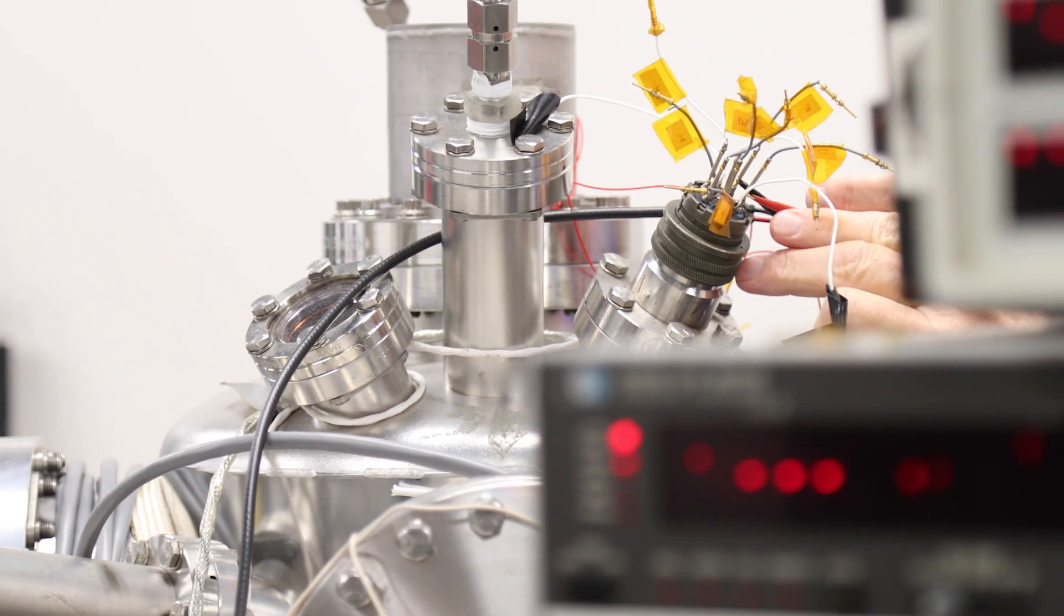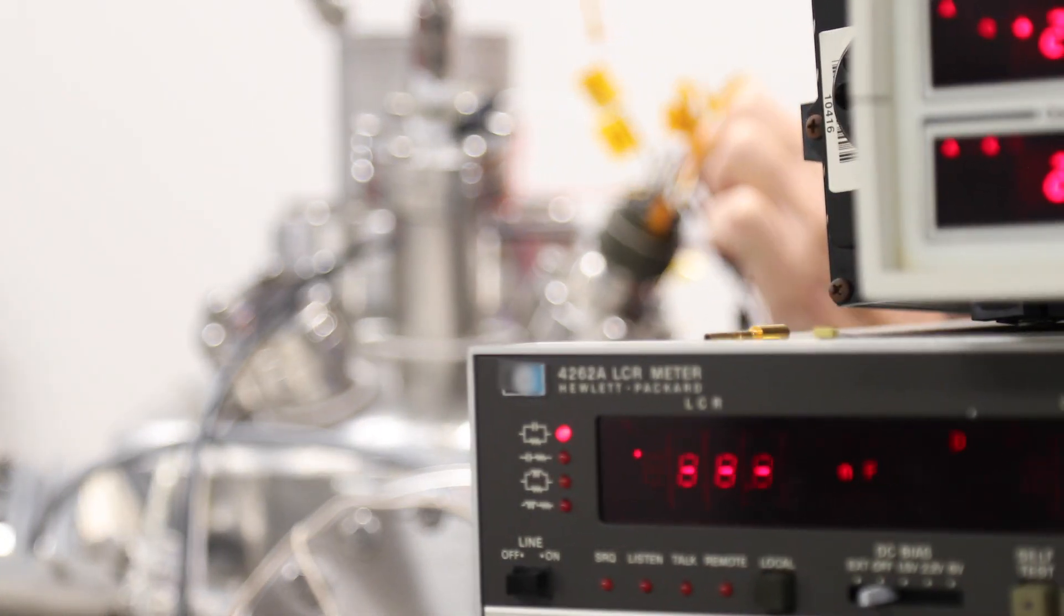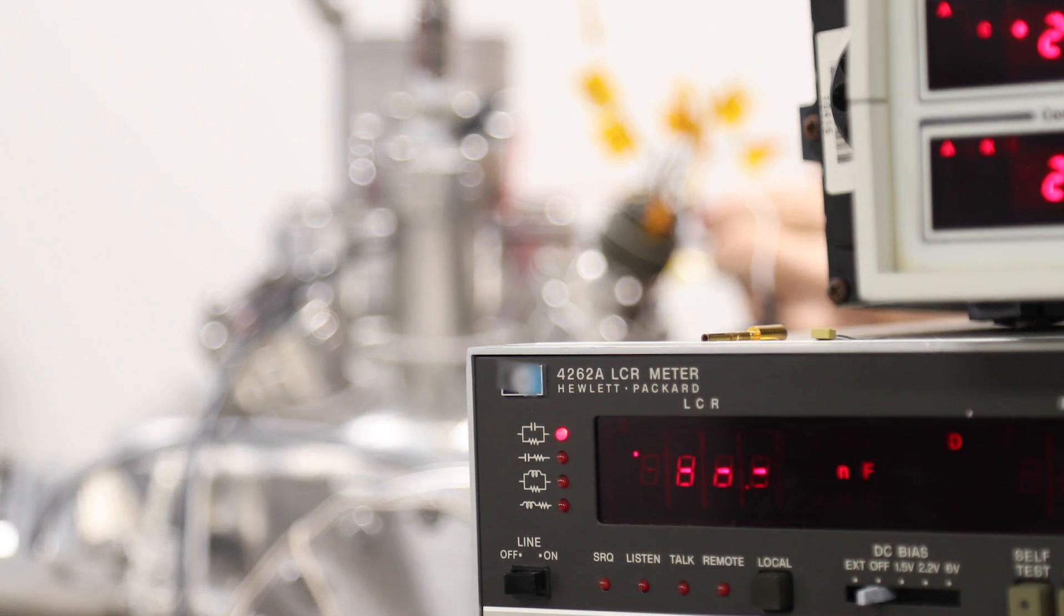We have a set of electrodes. There are six samples spread around on a disk and there's a probe on each one to be able to measure its capacitance.